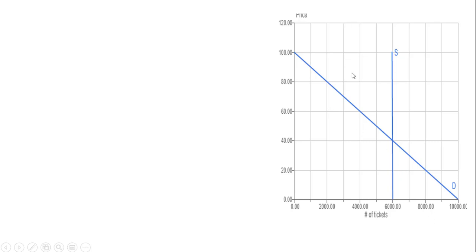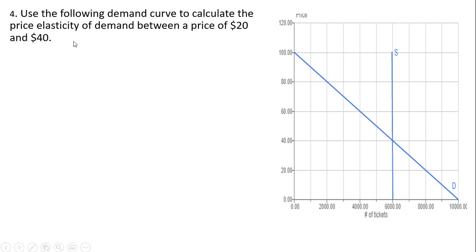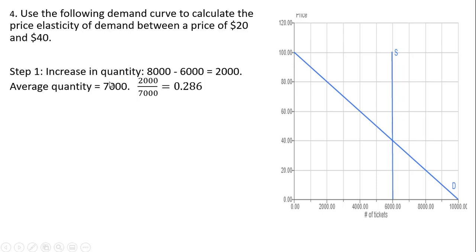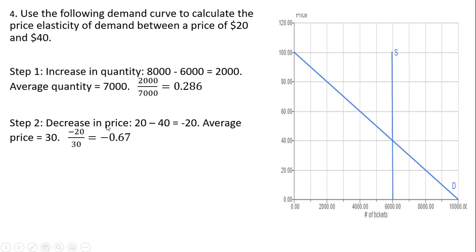We're going to look at this demand curve and calculate the price elasticity of demand between a price of $20 and a price of $40. At $20, the quantity demanded is 8,000; at $40, the quantity demanded is 6,000. Thinking of this as an increase in quantity from 6,000 to 8,000, that's a 2,000-unit increase. The average quantity is 7,000. Dividing gives 0.286. The decrease in price is minus 20, and the average price is 30, giving minus 0.67.